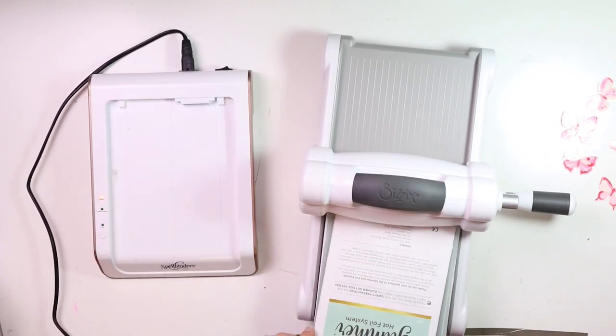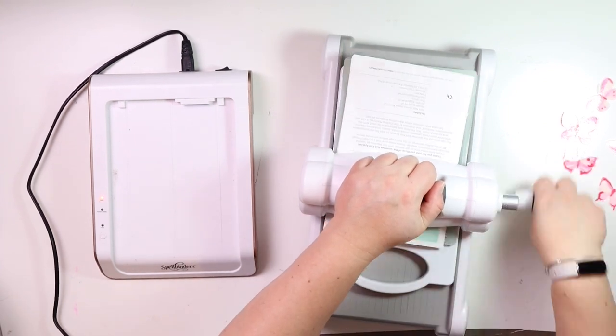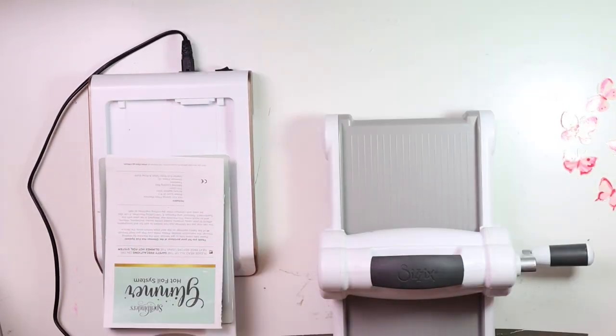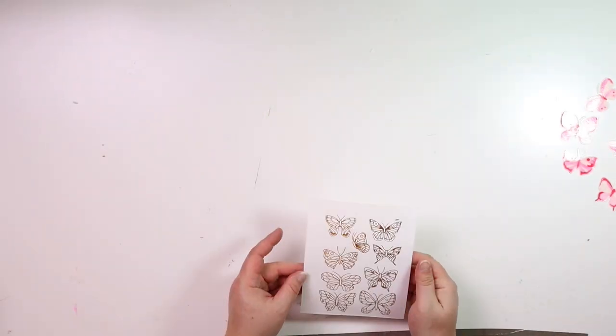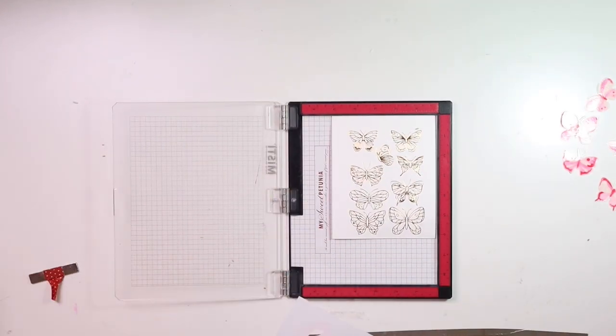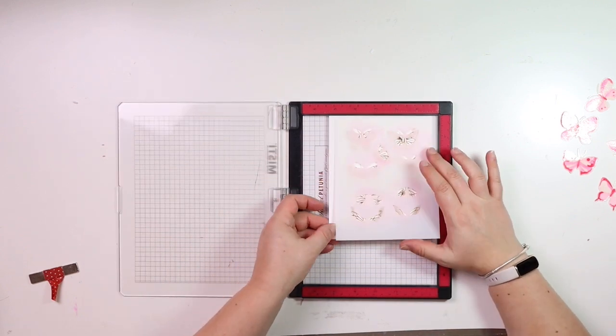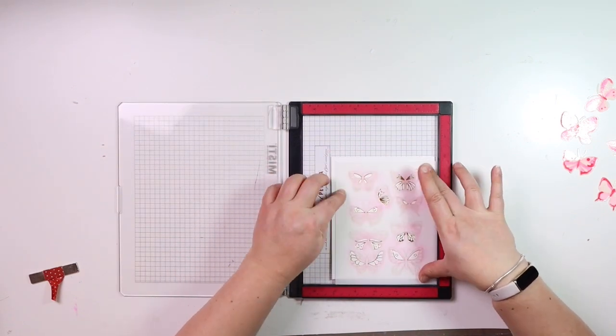There is no scrapbooking paper collection, and it really goes to show that you can create a gorgeous layout using your card making products. So I started by foiling some of those gorgeous butterflies and then I went on to stenciling them in with pinks.